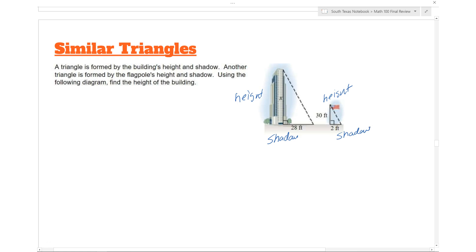Since we know that the two triangles are similar, we can set up a proportion. How do you set up a proportion? By setting up ratios. We have the height of the building is to the shadow as the height of the flagpole is to its shadow.